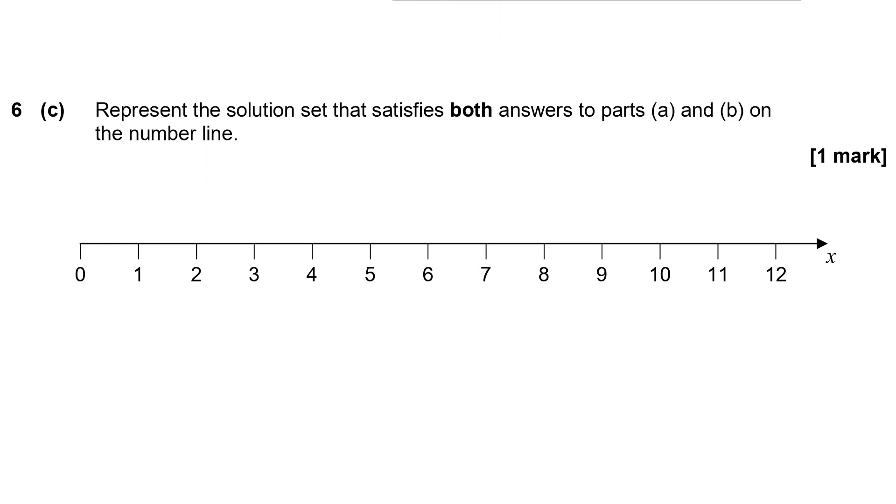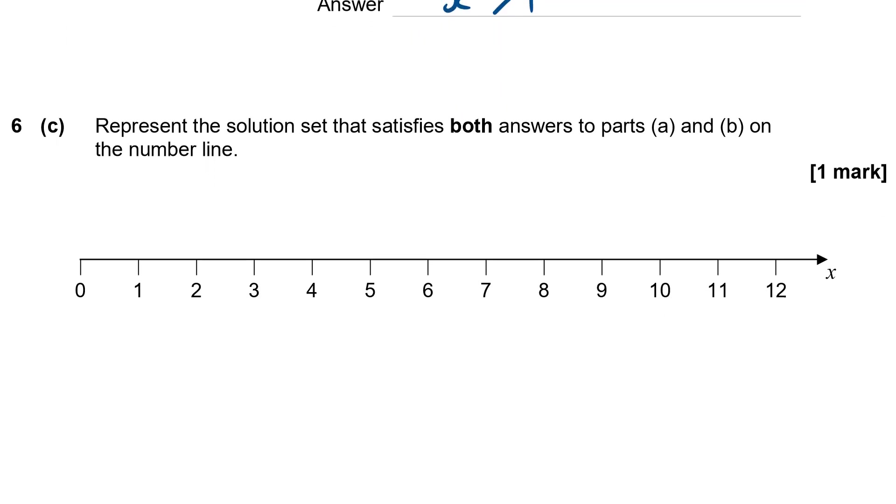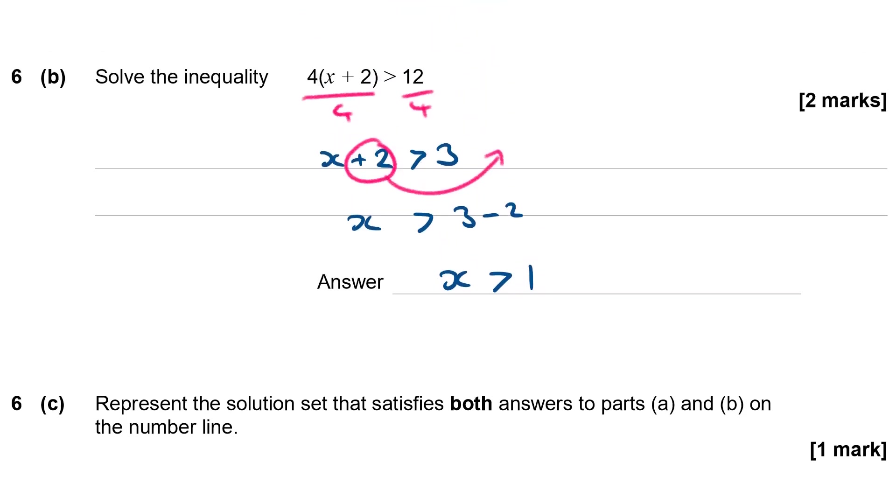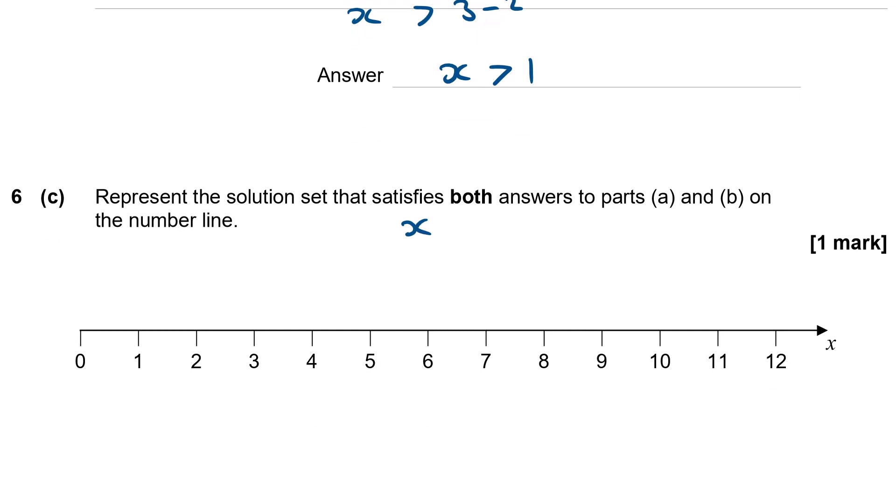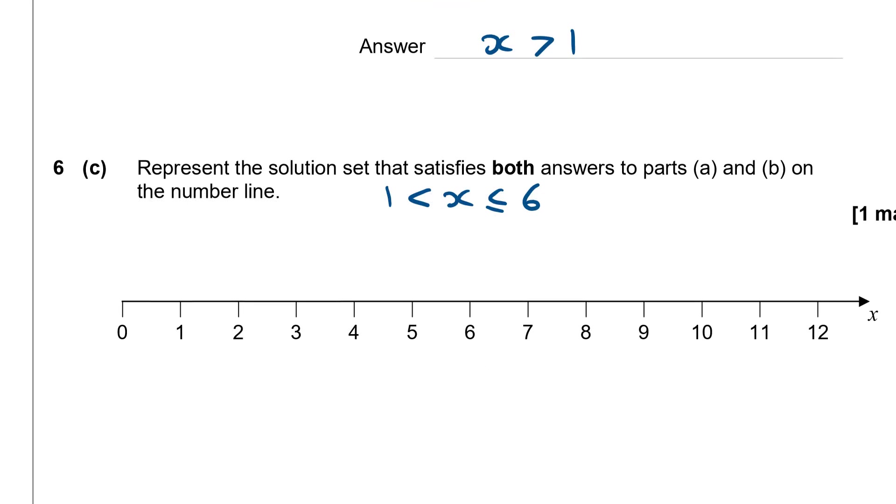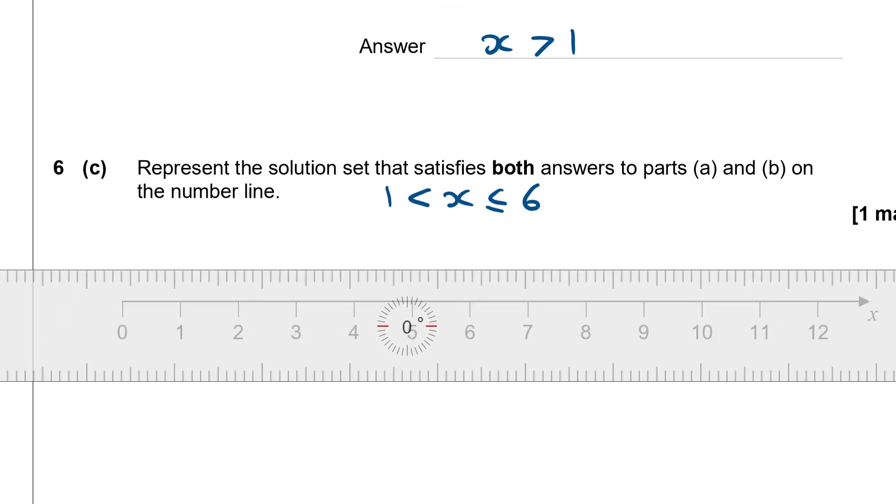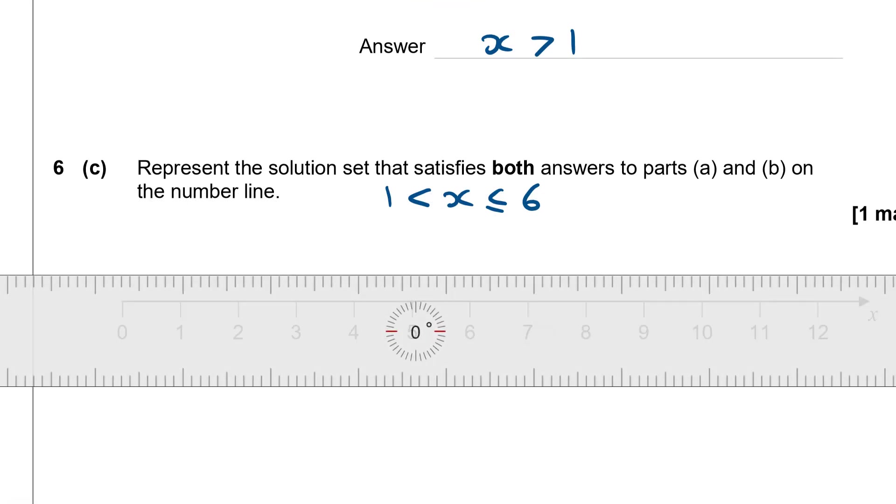Finally represent the solution set that satisfies both answers to part a and b on the number line. So from the first part we had x is less than or equal to 6. So x must be less than or equal to 6. And in the second part we had x is greater than 1. So x got to be between 1 and 6. It can include 6 but it cannot include 1. I'm going to show the range by drawing a line from 1 up to 6.